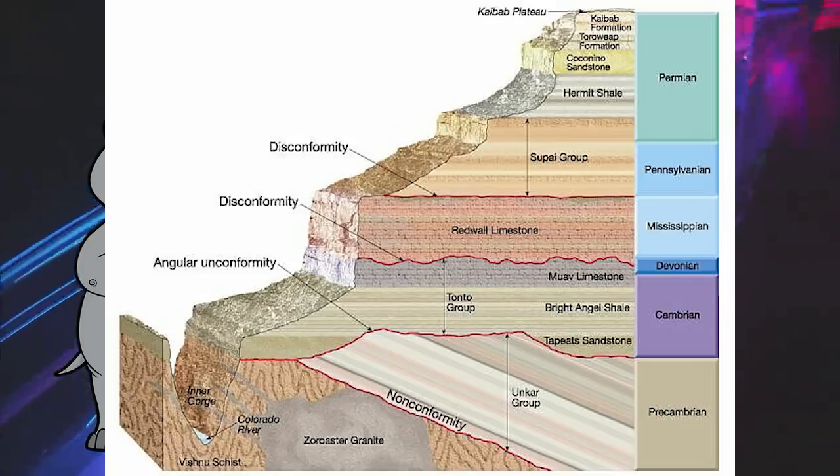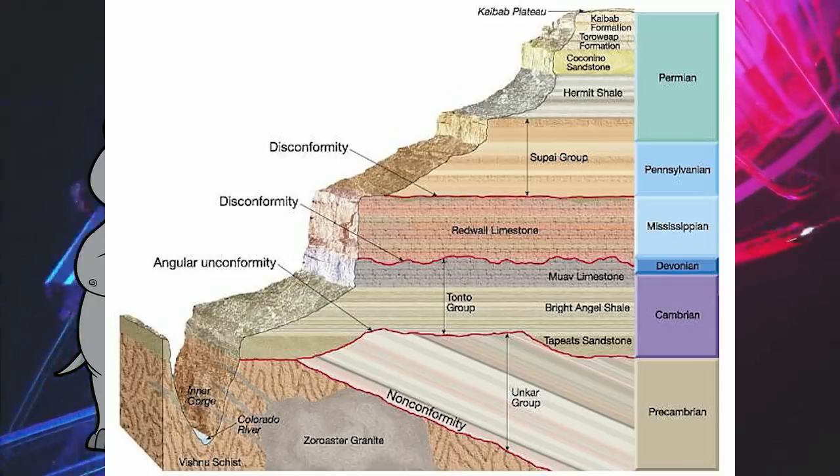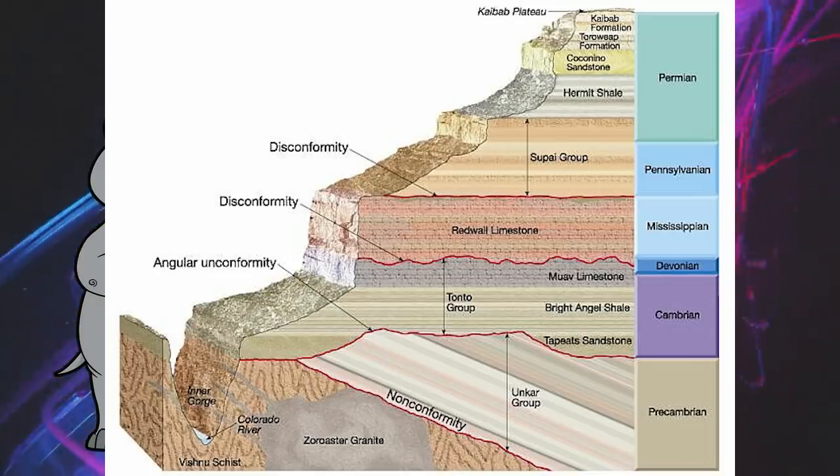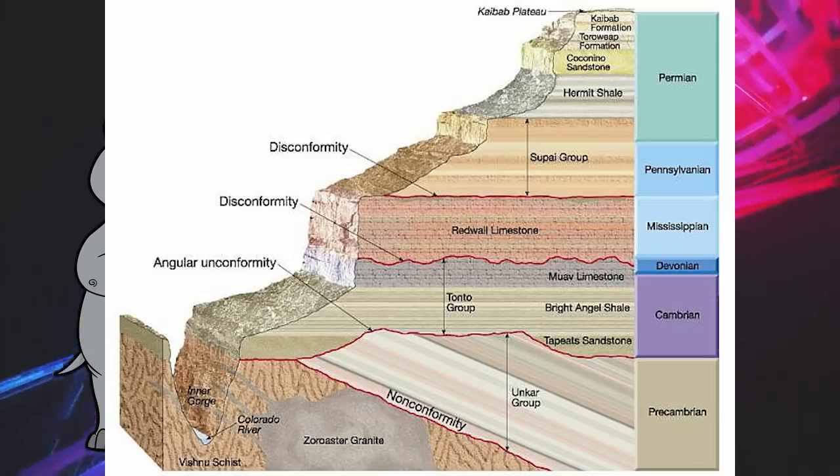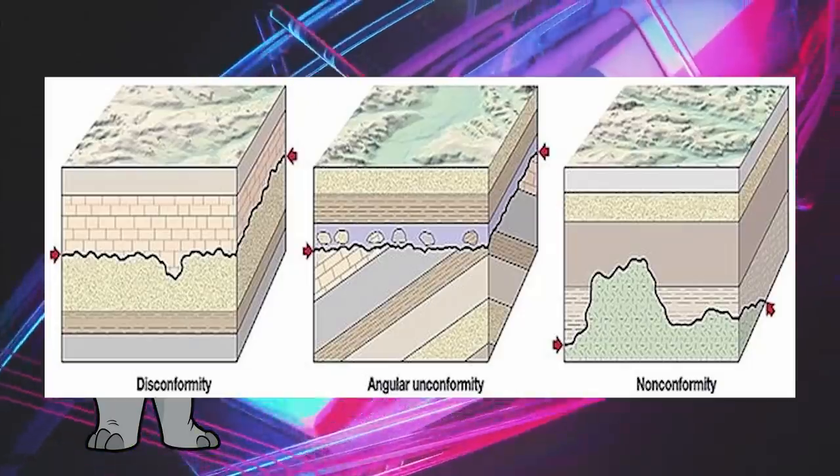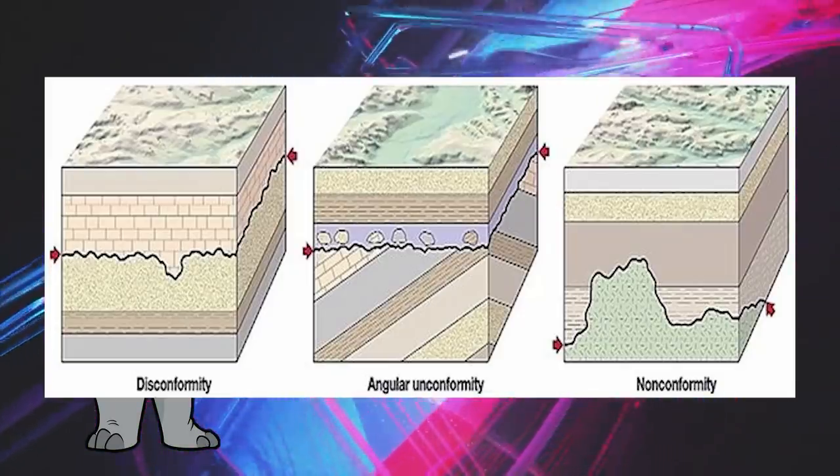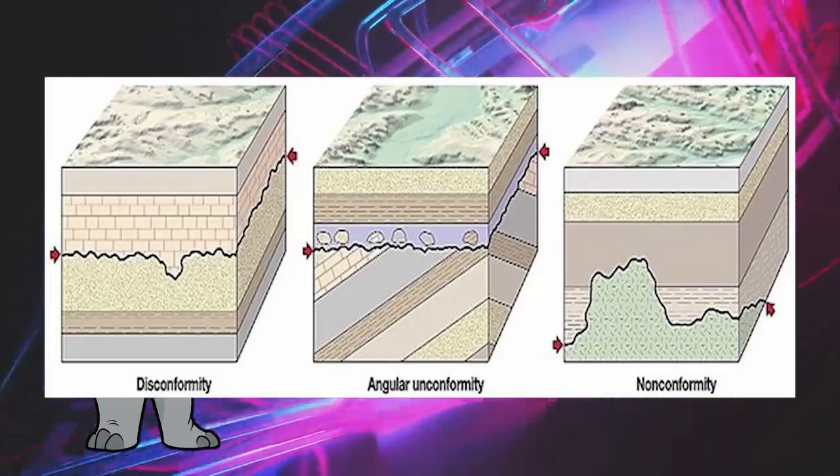Now for a brief primer on unconformities. Simply put, an unconformity is just time that is missing from the geologic record. Deposition is not a universal constant, so sometimes there won't be deposition, or it will be eroded away. There are three basic types: nonconformities, angular unconformities, and disconformities.